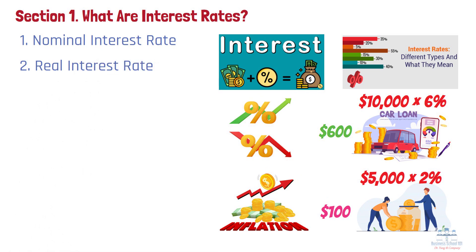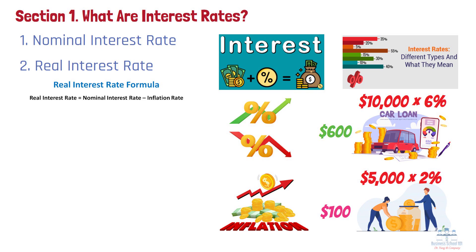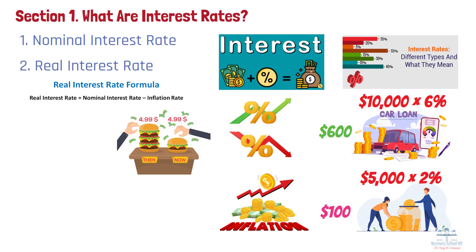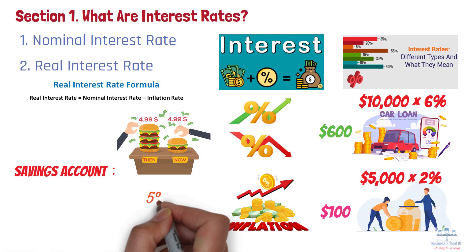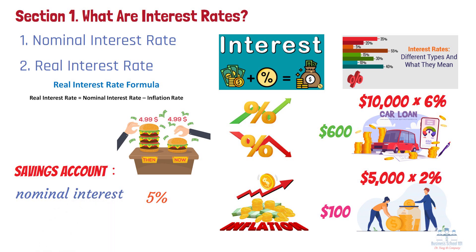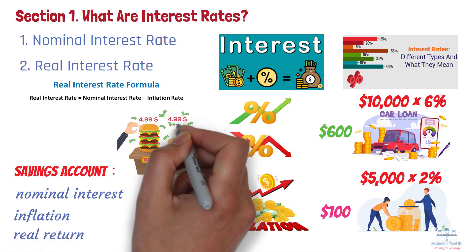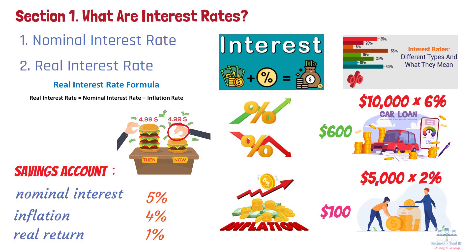The real interest rate is where things get interesting. It takes into account something crucial: inflation. It's the nominal interest rate adjusted for changes in purchasing power. Here's a concrete example: let's say you have a savings account with a 5% nominal interest rate. Sounds great, right? But if inflation is running at 4% during that same year, your real return is actually only 1%. This means while you're earning 5% in dollars, those dollars are worth 4% less in purchasing power.